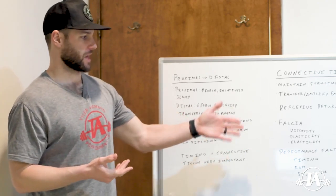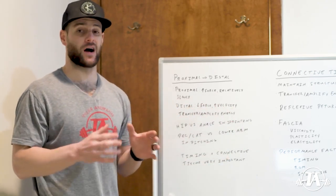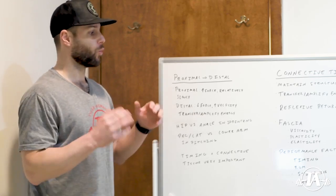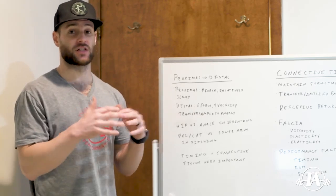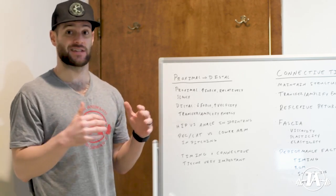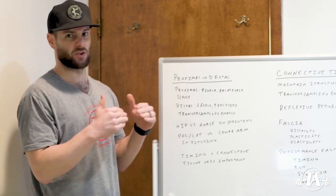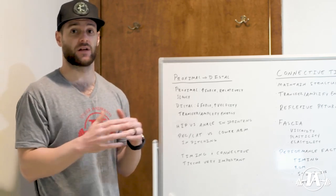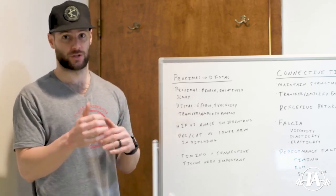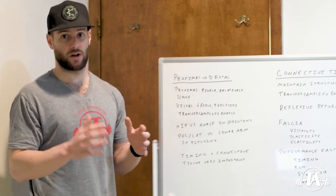Viscosity: fascia is primarily made of collagen and water, so hydration is a pretty important factor. Well-hydrated fascia should glide over itself, whereas fascia that is not well-hydrated gets stickier. This has important implications for movement and movement restrictions, which can obviously impact throwing velocity.